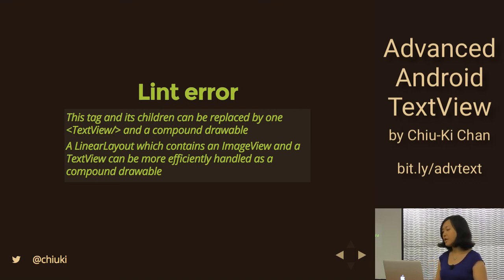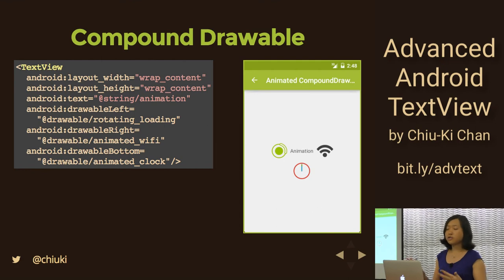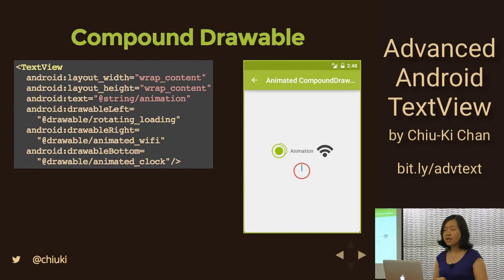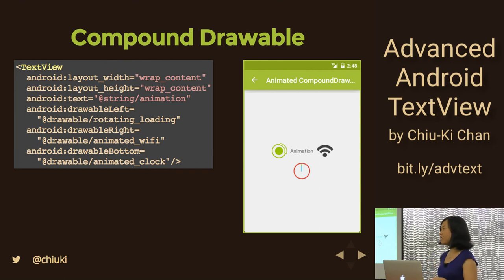Here we have a TextView specified in XML. The first three lines are pretty standard — wrap content, wrap content — and then we use the XML attributes drawable_left, drawable_right, and drawable_bottom to put images around the text.